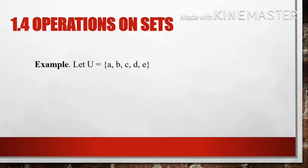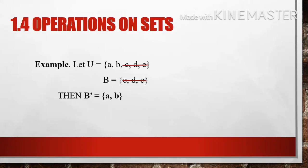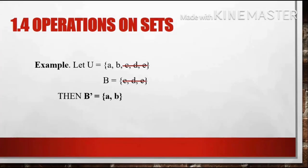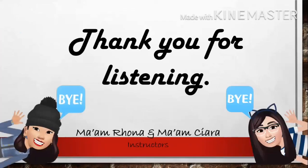Another example for complement of sets: universal set elements are A, B, C, D, and E; set B whose elements are C, D, and E. To find the complement of B, we disregard all elements in set B and its common elements with the universal set. So the complement of set B = {A, B}. That is all for sets. Thank you for listening, and I hope you learned.